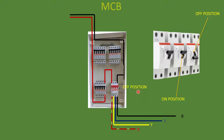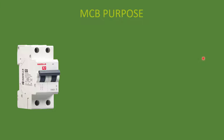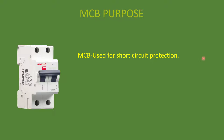If this MCB is in the off position, the current will be stopped or interrupted at the incoming terminal — there is no current in the circuit. If you switch on the MCB, the current starts to flow through it. The purpose of MCB is to provide protection from overcurrent. It provides two types of protection: short circuit protection and overload protection. It is thermal and magnetic in operation.